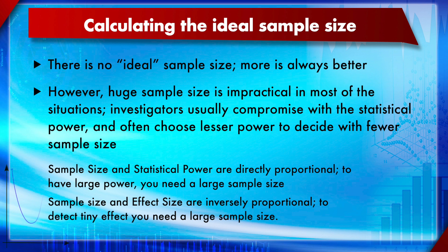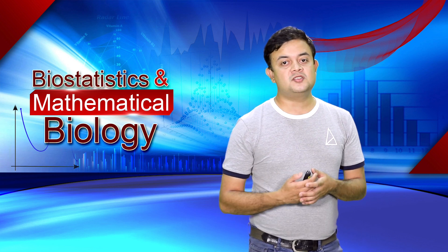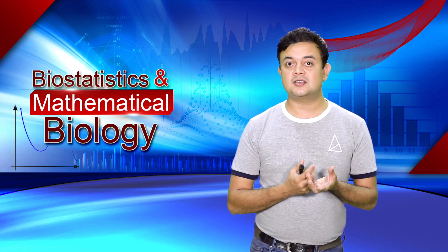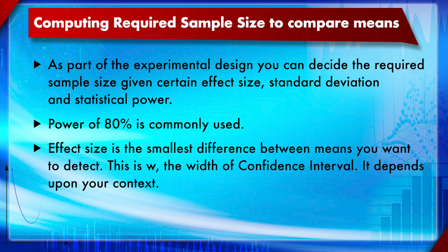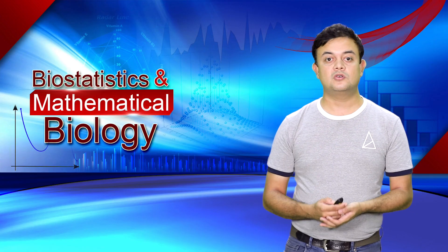To detect a very small effect size, you need a huge sample. If you have a large effect size, you don't need as many samples. To compute the required sample size for comparing means — for example, to do a t-test — you decide the required sample size given a certain effect size, standard deviation, and statistical power. A power of 80% is arbitrarily and commonly used. The effect size is the smallest difference between the means that you want to detect, which depends on your context.